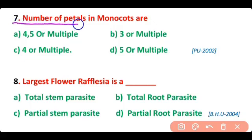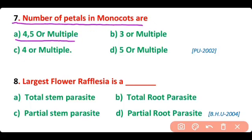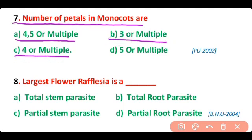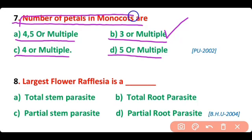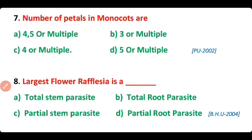Question 7. The number of petals in monocots are: 4 or multiples thereof, 3 or multiples of 3, 4 or multiples of 4, or 5 or multiples of 5? The correct answer is option B. The number of petals found in monocots are mostly 3 or multiples of 3.